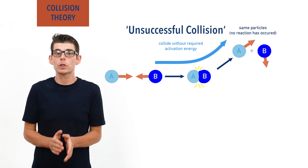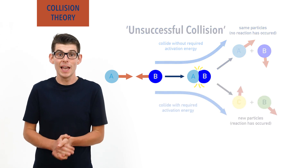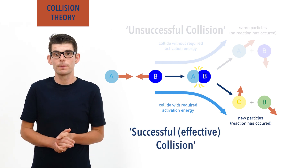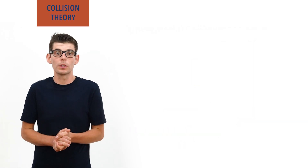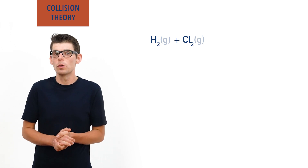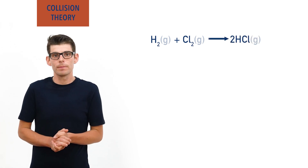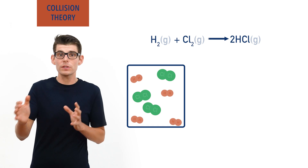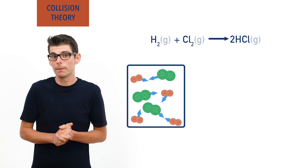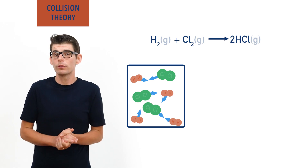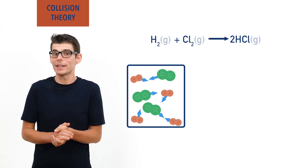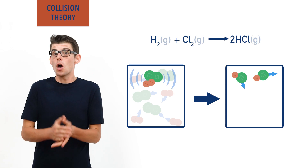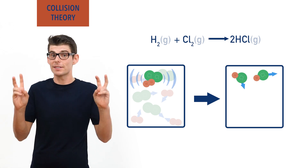If, however, two particles do collide with the required activation energy and a reaction does occur, the collision is described as being successful or effective. For example, hydrogen and chlorine molecules, H2 and Cl2, can react together to form hydrogen chloride, HCl. In a container of hydrogen and chlorine gas, molecules of H2 and Cl2 will constantly be moving around and hitting into each other. If a molecule of hydrogen and chlorine hit each other with the required activation energy, the H2 and Cl2 molecules react and HCl gets formed — a successful collision.